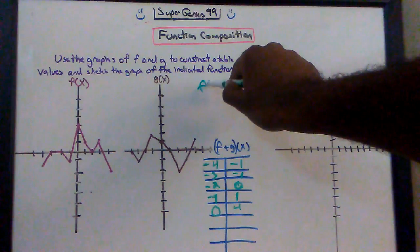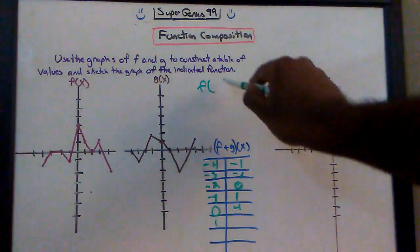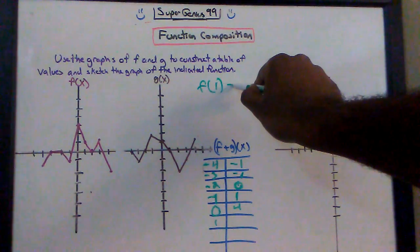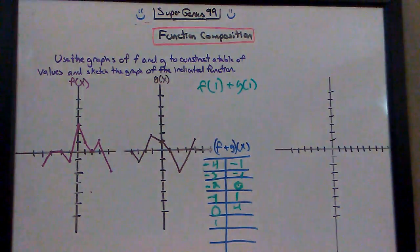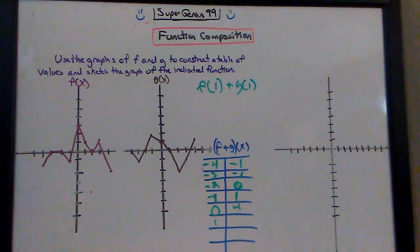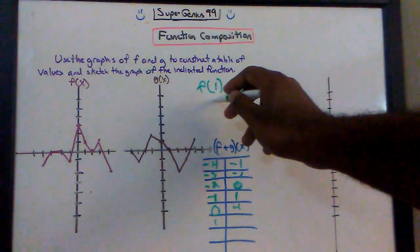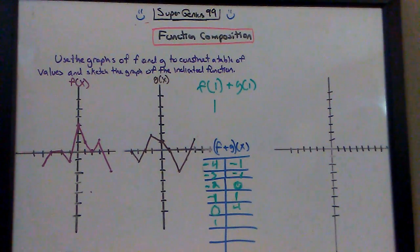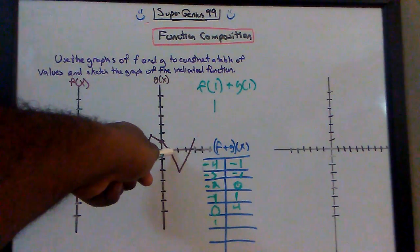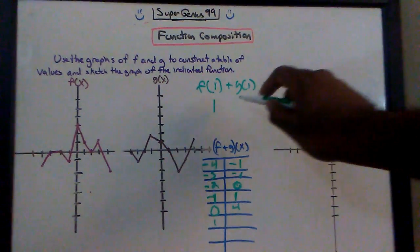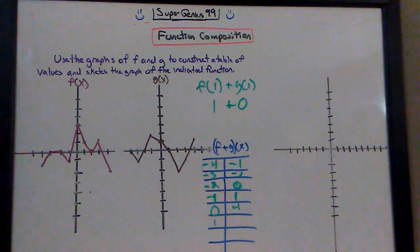The next one is x equals 1 — f of 1 plus g of 1. What is the corresponding y value when x is 1 in the f function? It happens to be 1. What is the corresponding y value when x is 1 on the g function? It's 0. So 1 plus 0 is 1.